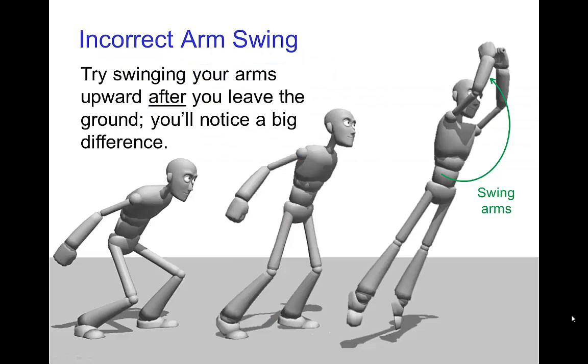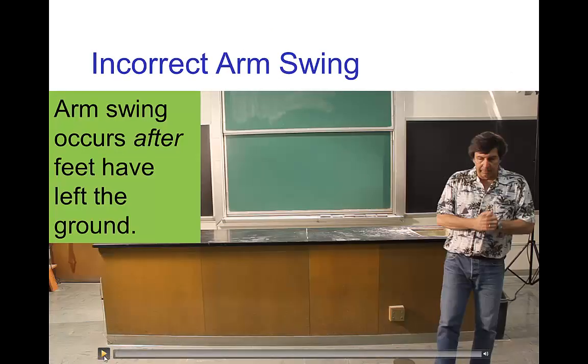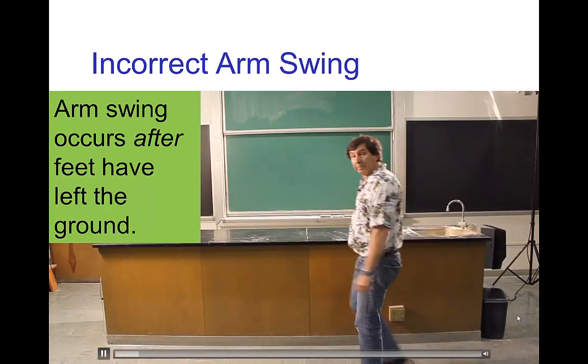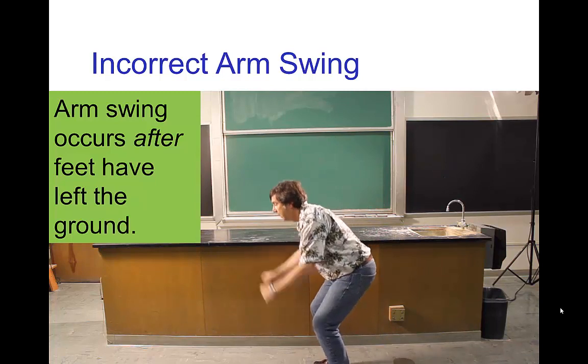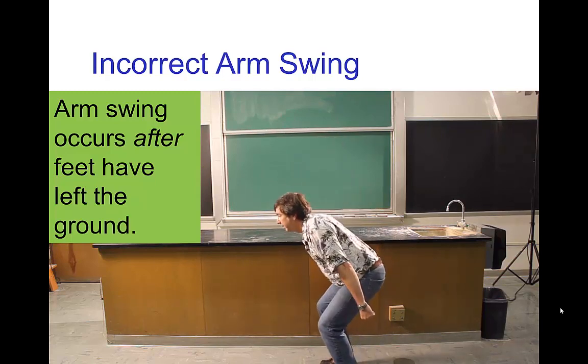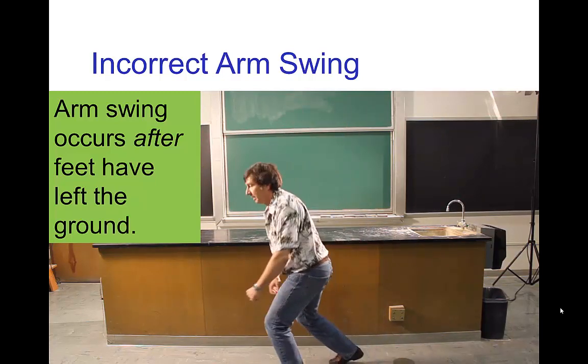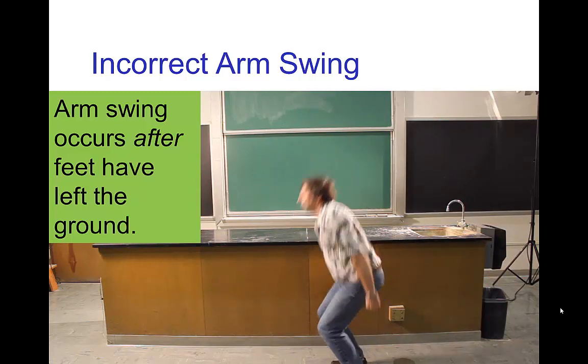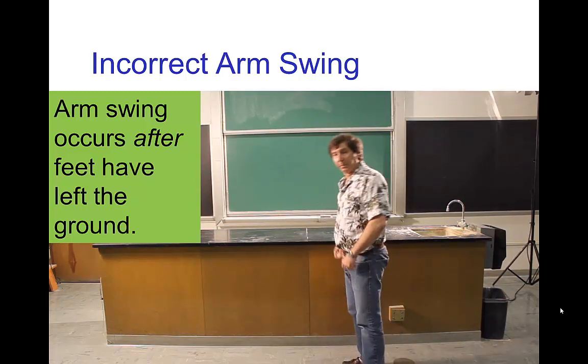Now, the incorrect way to animate the arm swing in a jump would be to swing the arms late, basically to be swinging the arms as the character has already left the ground. Let's see what happens if you try to jump in this fashion. This is very unnatural and highly uncomfortable, so I strongly recommend that you try it yourself so that you can feel what it's like.